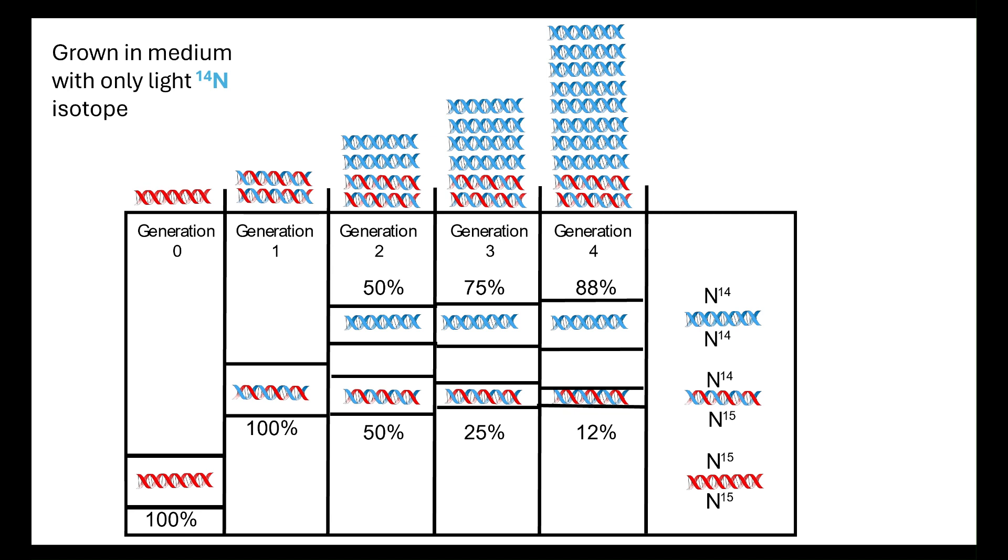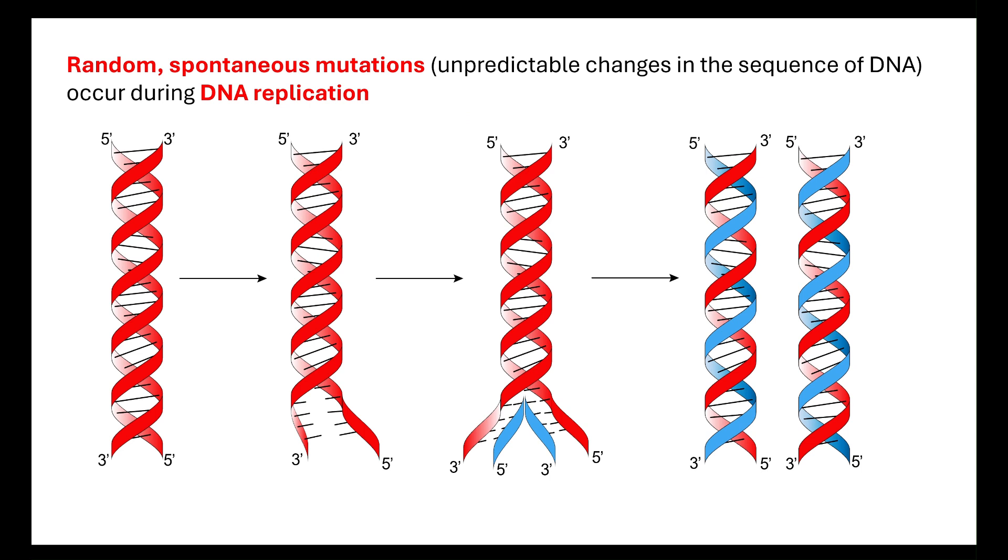Every time it takes the original from the generation before, it breaks that apart and that acts as a template. Then the new strand gets built from those free nucleotides which are only made up of that light isotope.